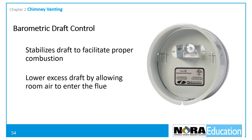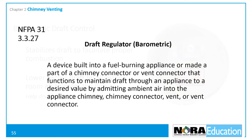Barometric draft controls lower draft by allowing room air to mix with the combustion gases as they rise through the flue pipe. They also help dry moisture from the chimney during the burners-off cycle. NFPA 31 defines the draft regulator as a device that functions to maintain draft through an appliance to a desired value by admitting ambient air to the appliance chimney, chimney vent, or vent connector.